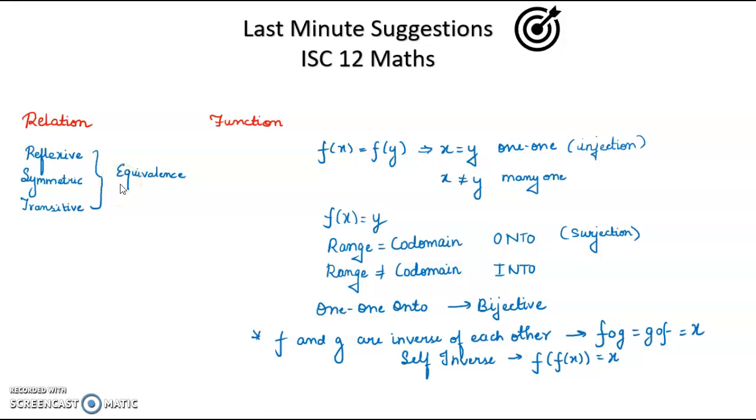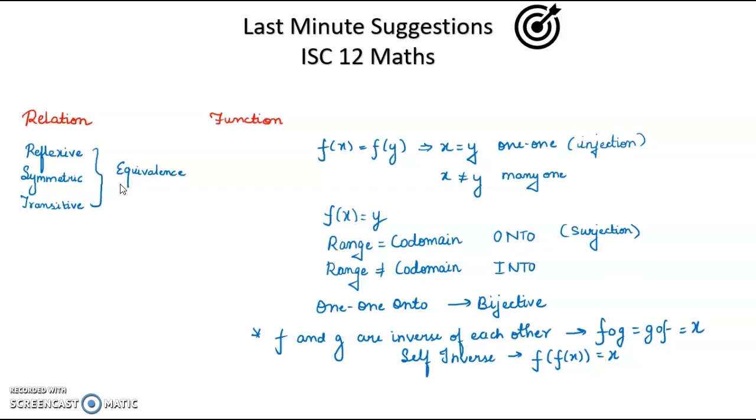In the chapter of relations, you must be aware of these terms: reflexive, symmetric, and transitive. When these all combine, it forms an equivalence relation. Please check whether the relation is reflexive, symmetric, or transitive, whatever the question asks. Sometimes students don't realize that the relation is not transitive. They ignore some ordered pairs, so you have to pay attention to this transitive part, which is a little bit tricky.